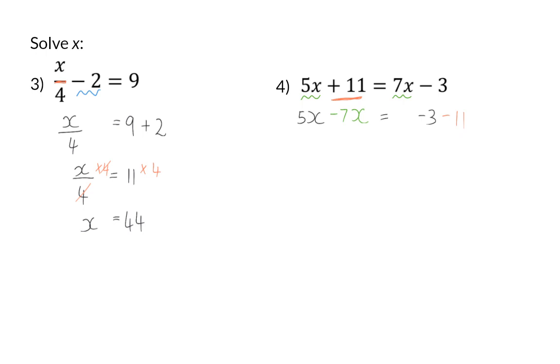So, on the left-hand side, I now have minus 2x is equal to the right of minus 14. And to solve x, I need to get rid of the times by minus 2, which means I will divide by minus 2 on both sides. And now, I have x is equal to 7.